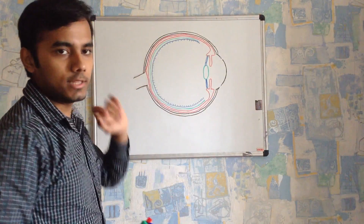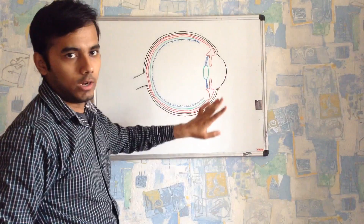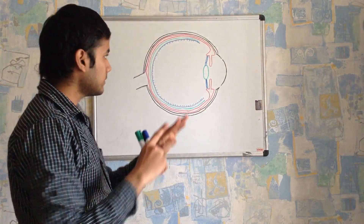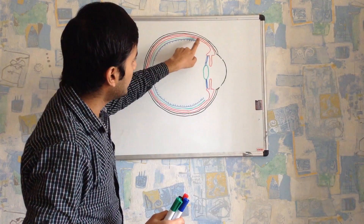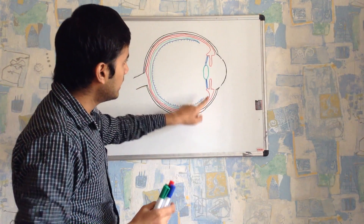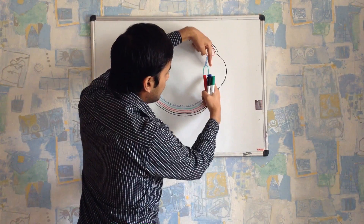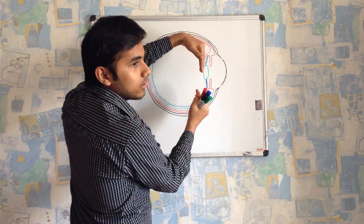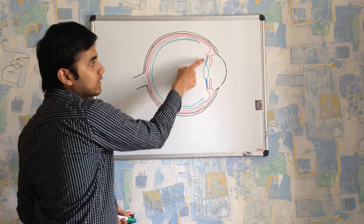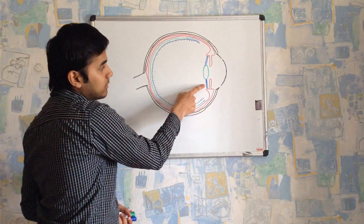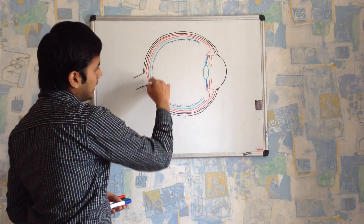To summarize all three layers: the outer layer is called the sclera; sclera anteriorly has a convex part called the cornea, and the function of the sclera is protective. The second layer, drawn in red, is the highly vascular layer, which contains the posterior part called the choroid. The choroid anteriorly bulges as a thickening called the ciliary body. From the ciliary body, structures called the iris face each other, and the space between the two iris is called the pupil. The lens is suspended by suspensory ligaments attached to the ciliary body.